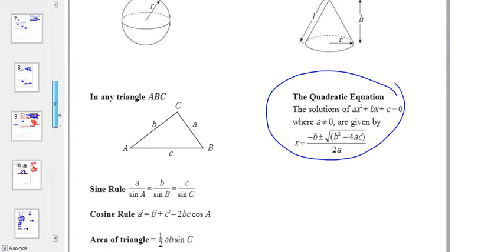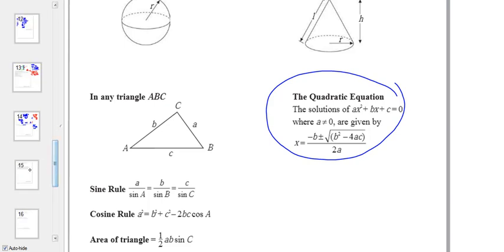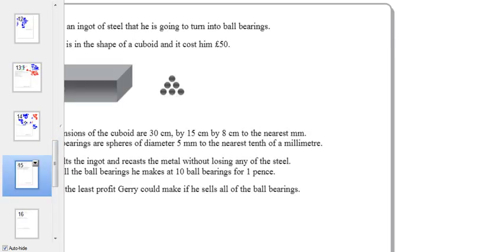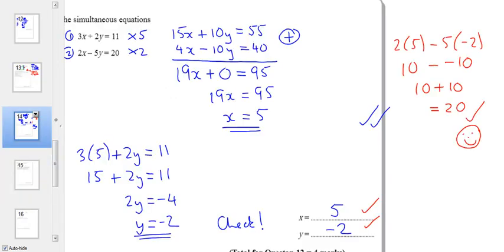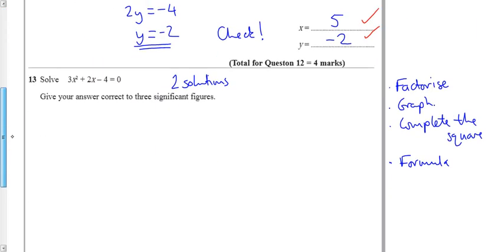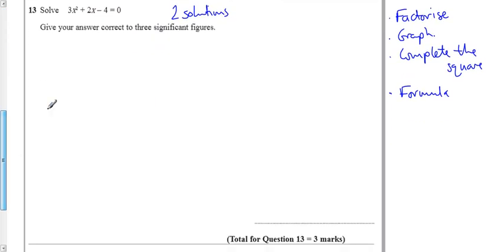Now, how do you know which one of those methods to use? Well, I like to use this one, this one's always my first choice if you can. But it does say the hint is to three significant figures, now that implies you can use a calculator, so that means in this question we're going to use the formula.